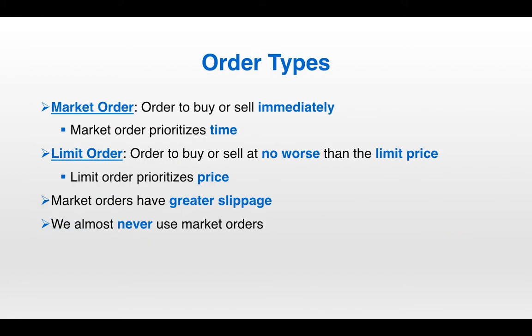There are two fundamental order types: the market order and the limit order. All other order types are combinations of these two. The market order is an order to buy or sell immediately — it prioritizes time and sacrifices price if necessary. The limit order, on the other hand, is an order to buy or sell at no worse than the specified limit price — it prioritizes price and will sacrifice time if necessary. In practice, we almost never use market orders because they incur greater slippage by crossing the bid-ask spread, so we stick with limit orders.